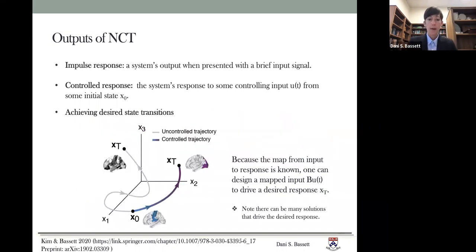The third kind of output that you can get from this approach is achieving a desired state transition. So because the map from the input to the response is known based on the model of the network and the model of the dynamics, one can design a mapped input B U to drive a desired response X T. And also, I would note that there are many solutions that could drive that desired response. So it's interesting to think about which of those solutions may be relevant for the brain and what constraints may help the brain determine which to use.